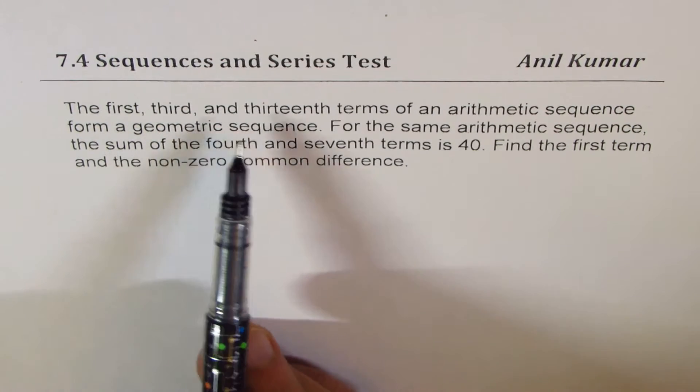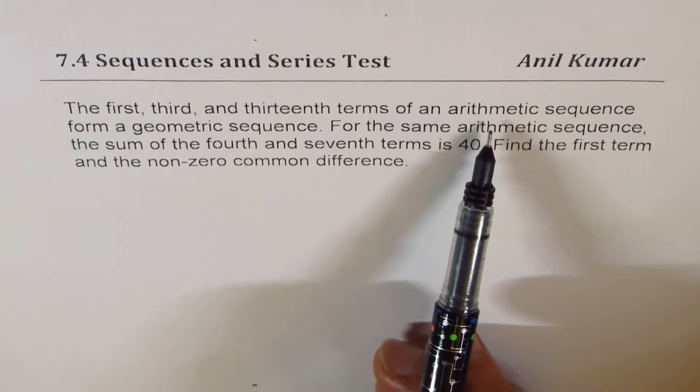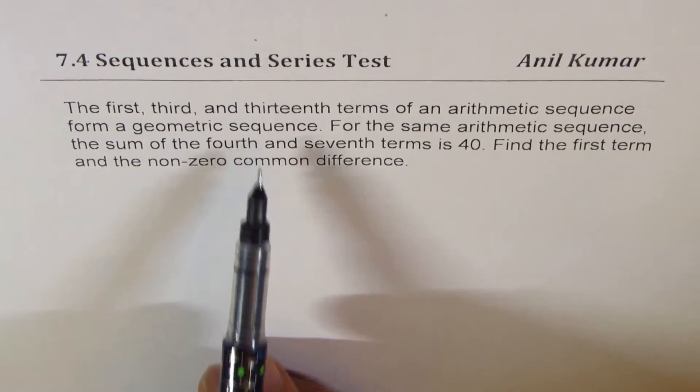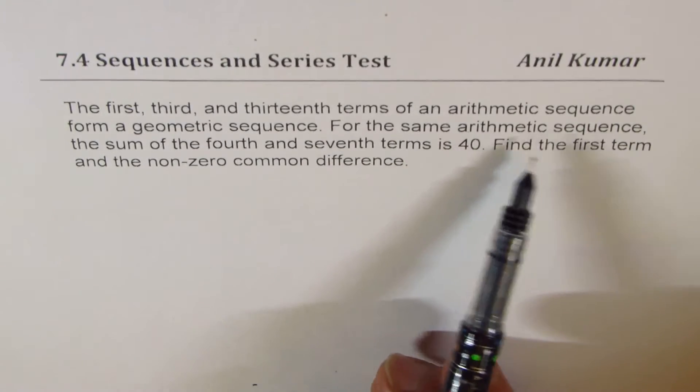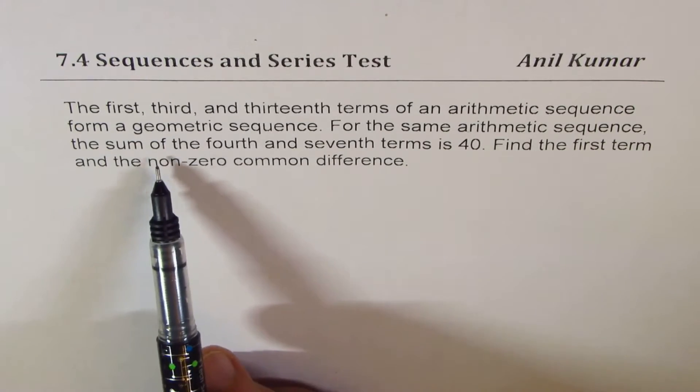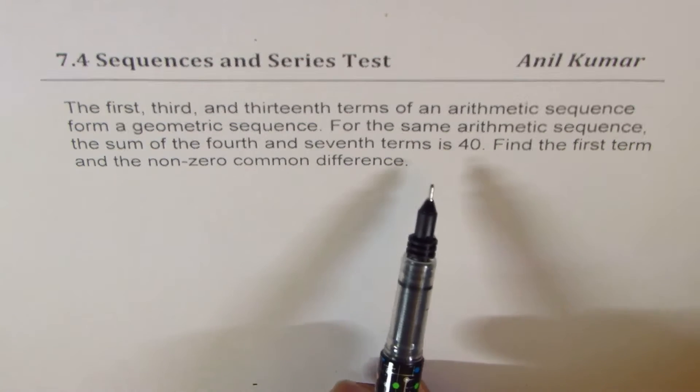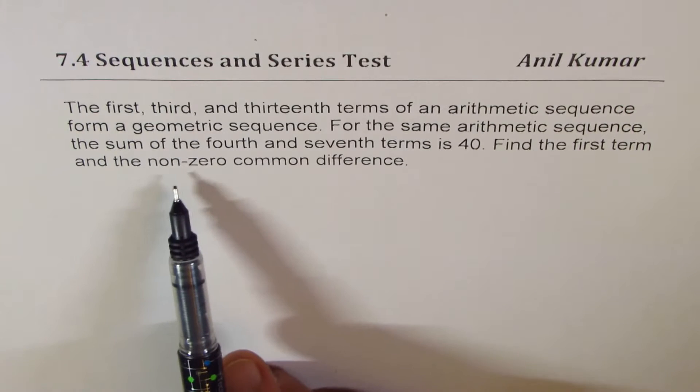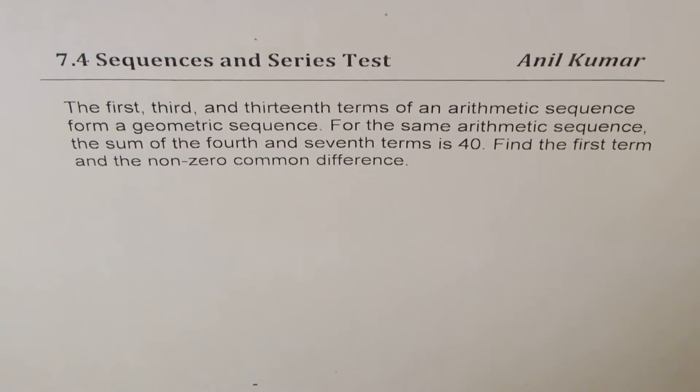The first, third, and thirteenth terms of an arithmetic sequence form a geometric sequence. For the same arithmetic sequence, the sum of the fourth and seventh terms is 40. Find the first term and the non-zero common difference.